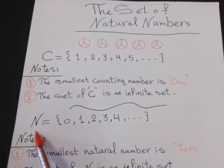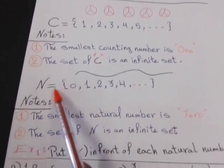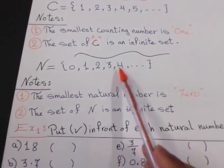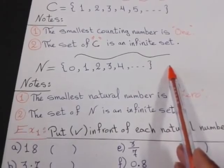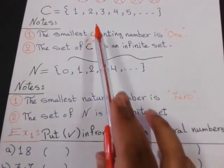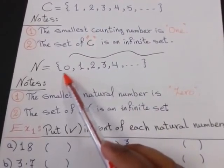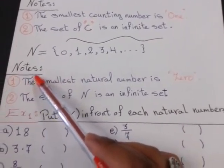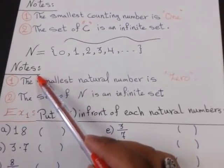What is the natural numbers, or N? N equals 0, 1, 2, 3, 4, and so on. The same as counting numbers, but I add 0 at the beginning of the set. We have also two notes on this set.